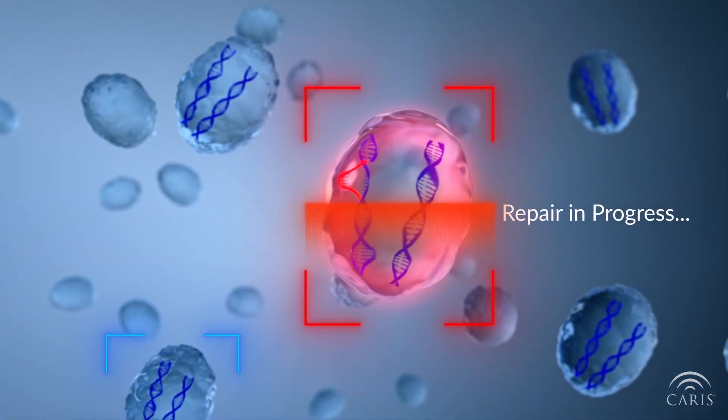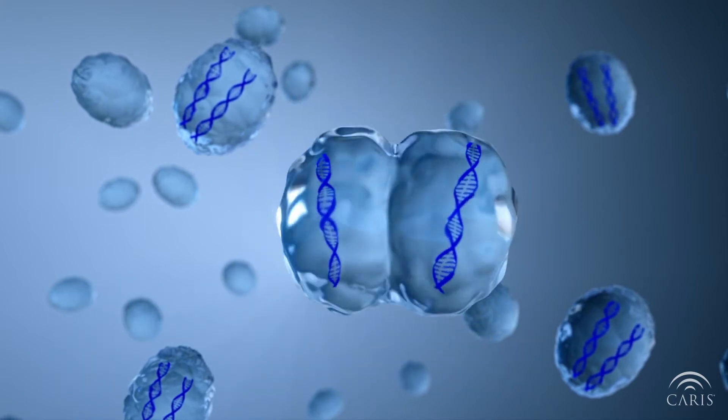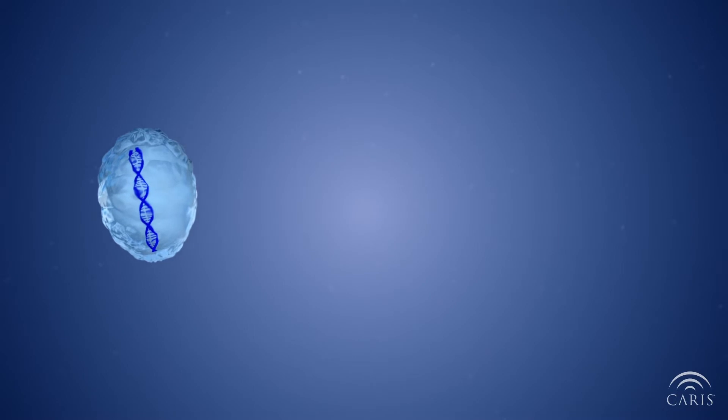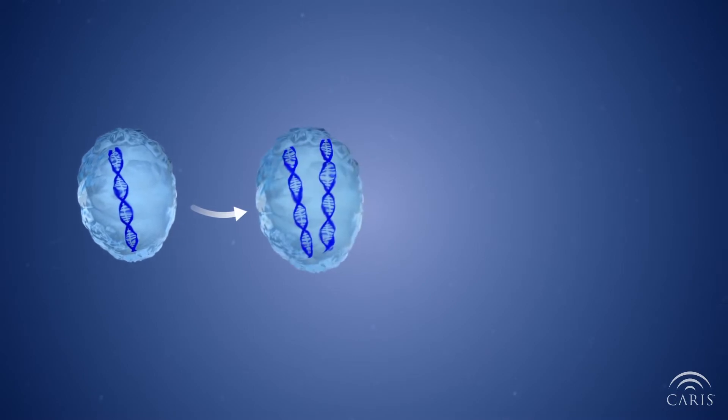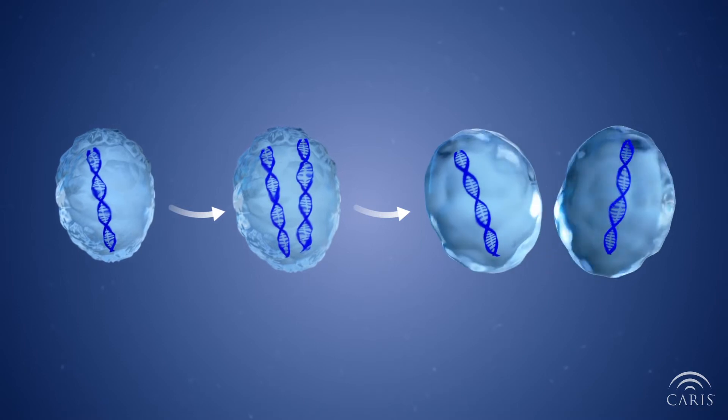Our bodies produce tumor suppressor and DNA repair genes, which regulate cell division and fix errors that occur during replication. As long as the DNA stays healthy and maintains its integrity, the cell is able to divide and perform all its necessary functions.